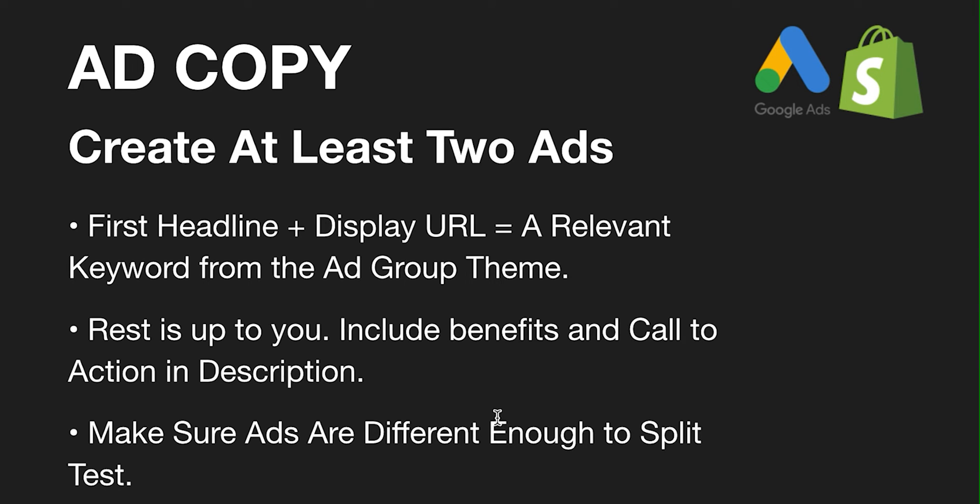You can also put that keyword in the display URL section. Pick some benefits, calls to action, features, anything like that. When you're doing a split test you want to make sure the split test is different enough — just changing one word really isn't enough of a difference to make it worth it, so make sure the ad is different enough. I'll pick out one keyword for the first headline and pick out some other keywords for the split test, and you can also change up the features, benefits, and things like that.